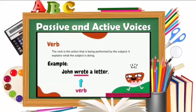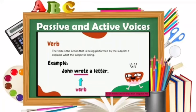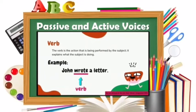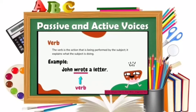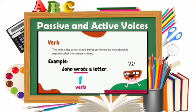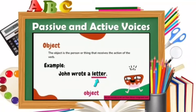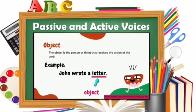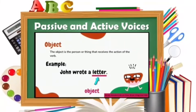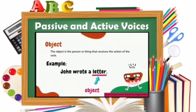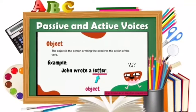The verb is the action that is being performed by the subject. It explains what the subject is doing. Example: 'Jan wrote a letter.' In this sentence, the verb is 'wrote.' The last one is object. The object is the person or thing that receives the action of the verb. Example: 'Jan wrote a letter.' In this sentence, the object is 'letter.'